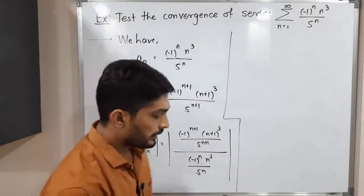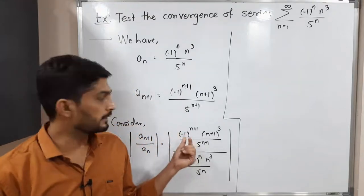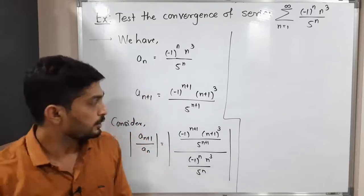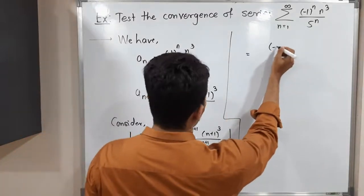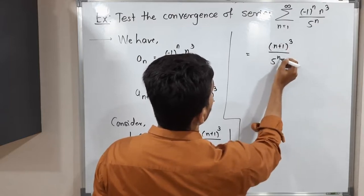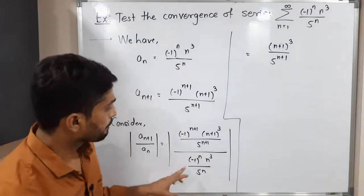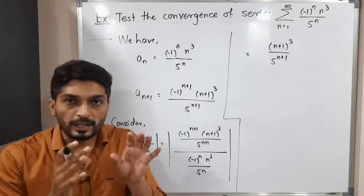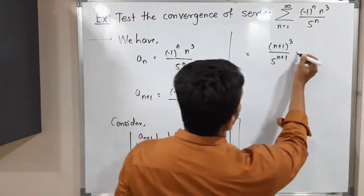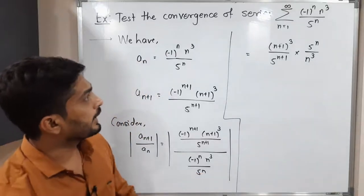When we take the modulus, there is no need to consider (-1)^n or (-1)^(n+1), since their value is either +1 or -1, and taking the mod gives a positive value. So we can write directly (n+1)³ / 5^(n+1). Since a_n is in the denominator, we interchange numerator and denominator, giving us 5^n / n³ in the upper part.